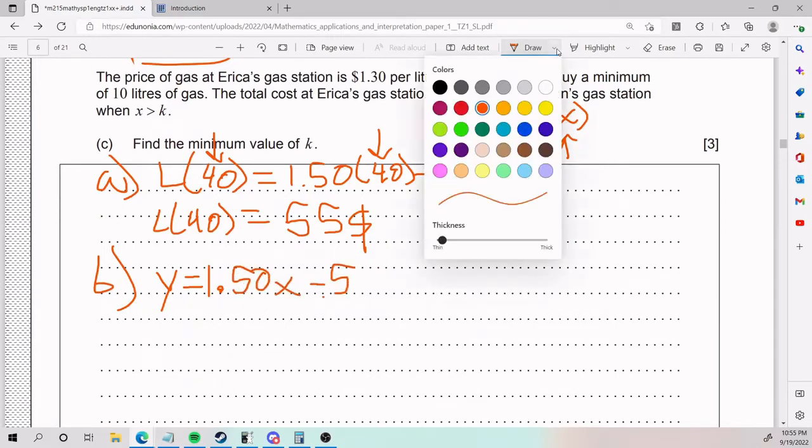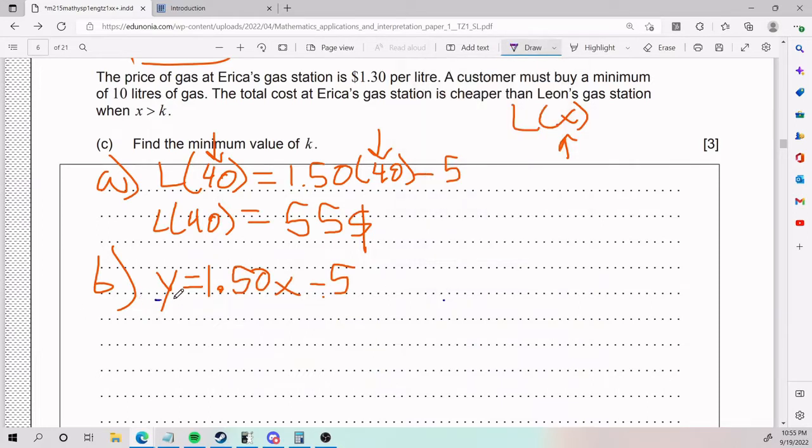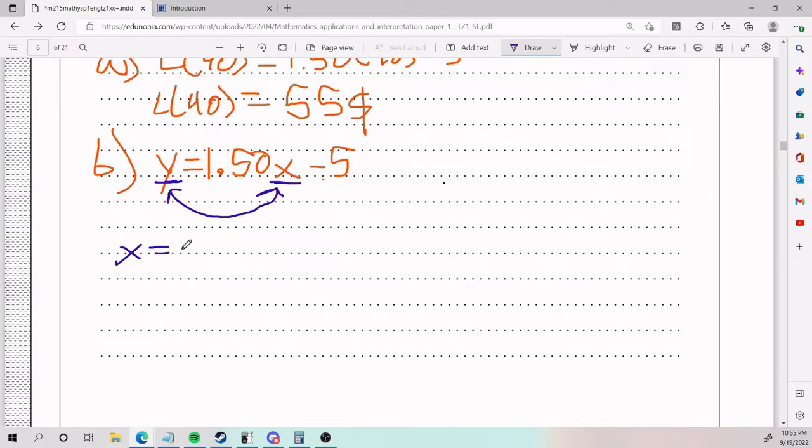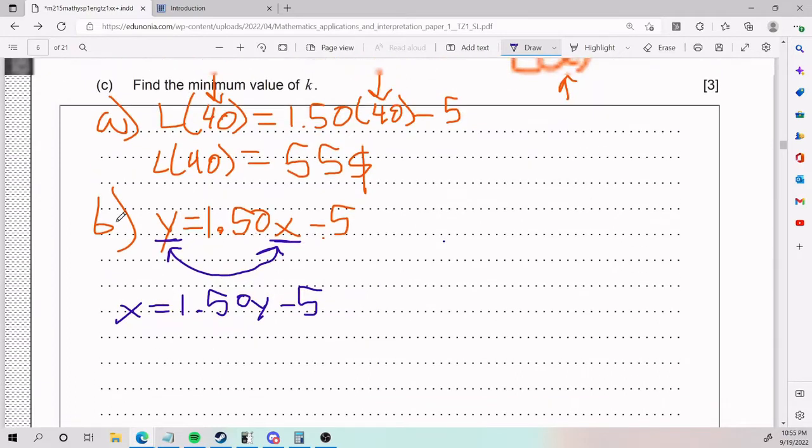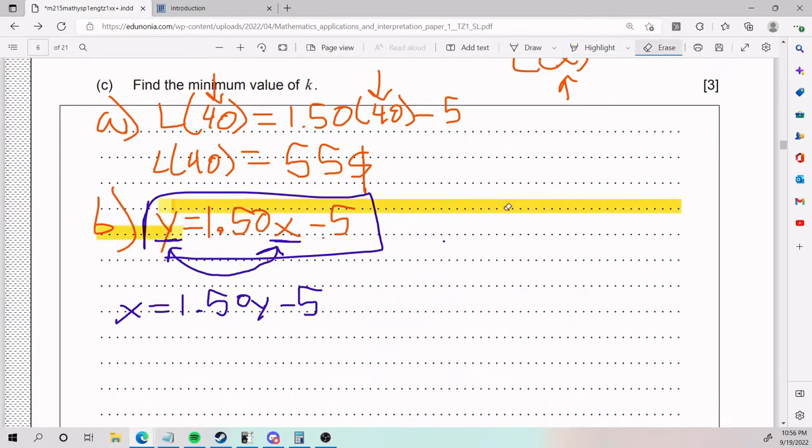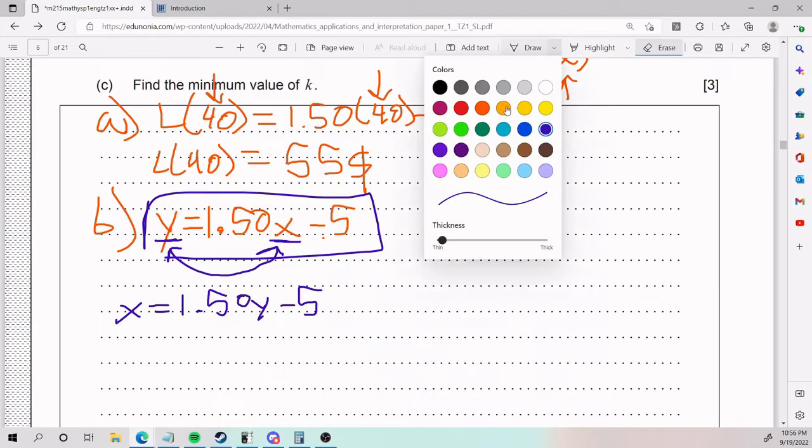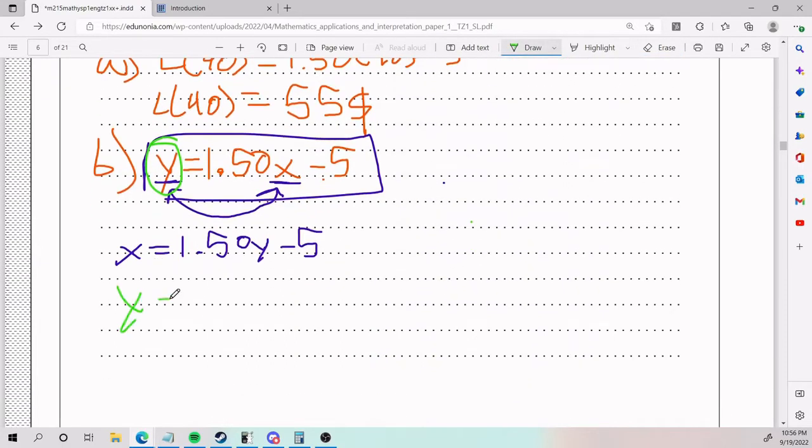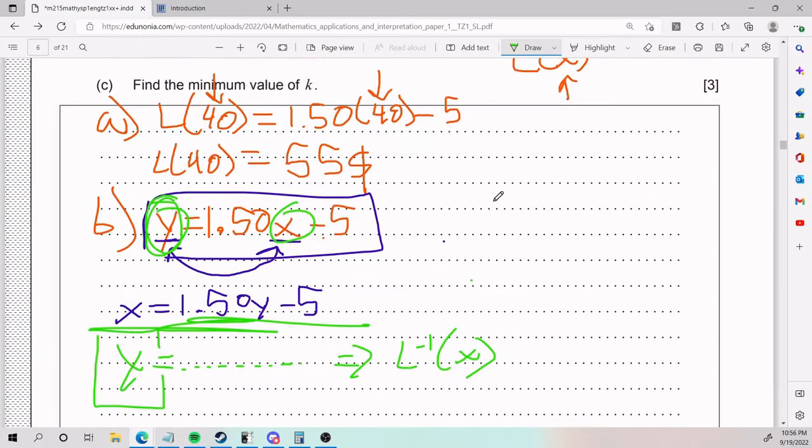If we are talking about the inverse function, what we have to do is take this guy and this guy and flip it. If we flip it, we end up with X equals 1.50Y minus 5. So what I need to do now is get to something similar to this in the sense that Y is alone. This Y has to get alone. And so you want to reach Y equals something. And whatever that something is, is going to be your inverse function. So you flip Y and X, end up with something like that. Make sure you get Y alone. That is going to be your inverse function.